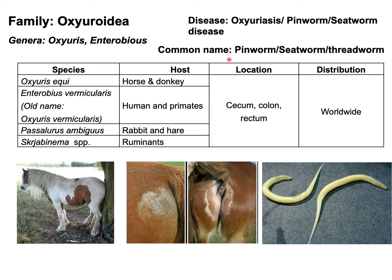These parasites are distributed worldwide. The common names for these parasites are pinworm, seedworm, or threadworm. The disease caused by Oxyurius equi is oxyuriasis, pinworm disease, or seedworm disease. The disease caused by Enterobius vermicularis is enterobiasis, which is important for humans and primates.